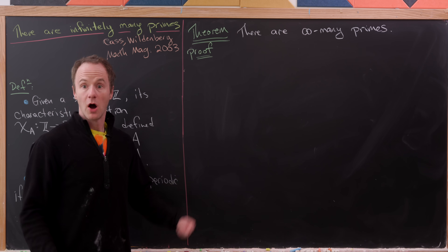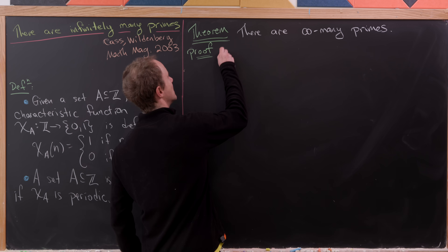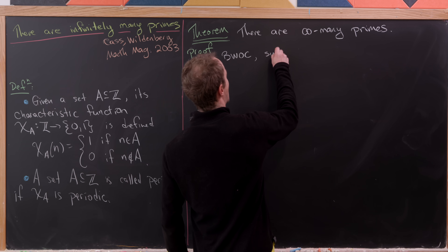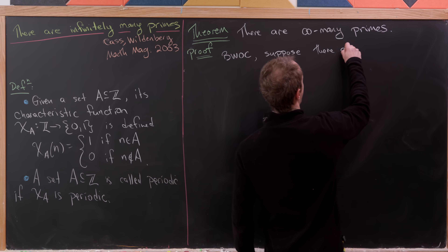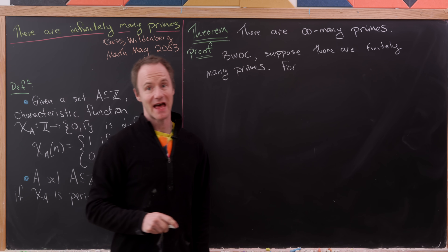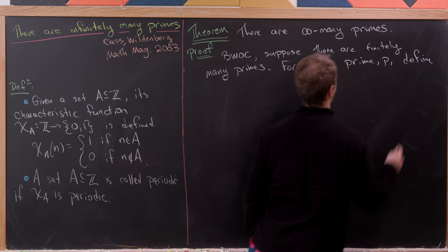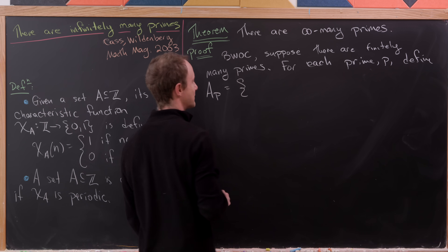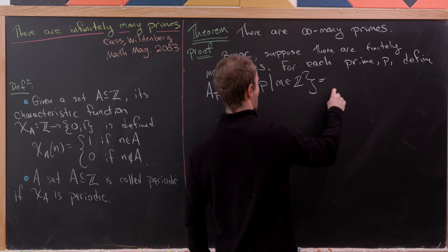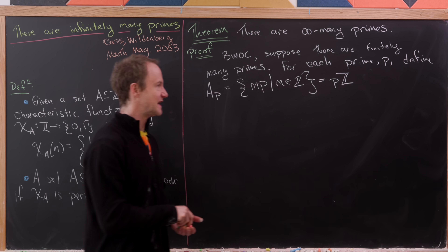Now we're ready for our main result: showing there are infinitely many primes using periodic sets. This will go like many proofs of the infinitude of primes — we work toward a contradiction. By way of contradiction, suppose there are only finitely many primes. For each prime P, define the set A_P as all integer multiples of P, i.e., everything of the form m·P where m is an integer — written P·Z.